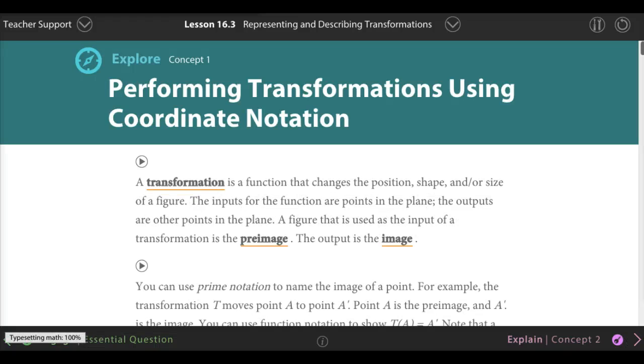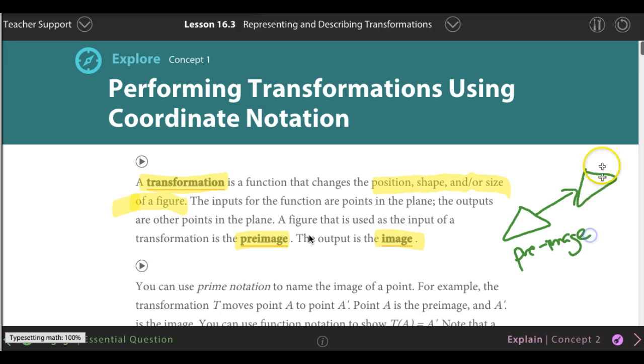You need to know what a transformation means. A transformation changes the position, shape, and/or size of a figure. When you start off, that's a pre-image. Later on, it becomes an image. So let's say I have this triangle and then I moved it here. It's the same triangle. This is called the pre-image, and this is called the image after I moved it.